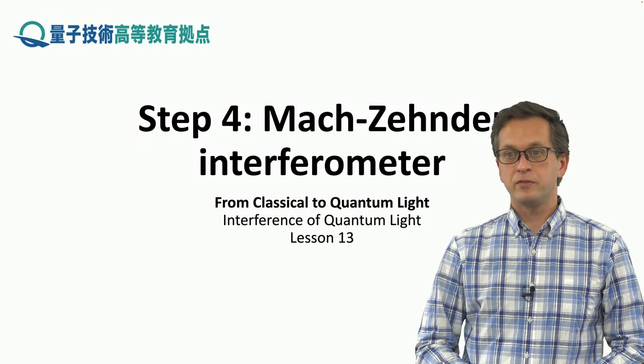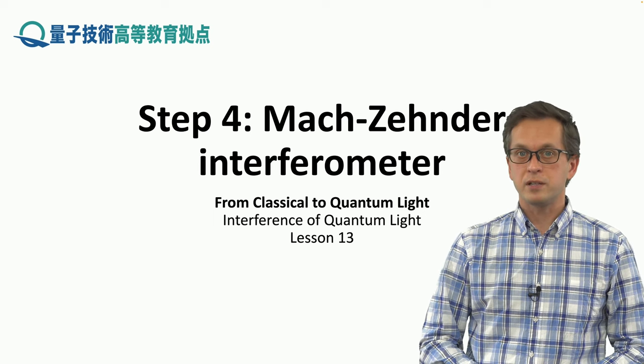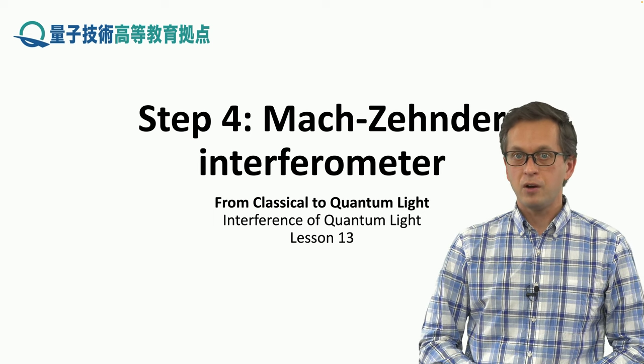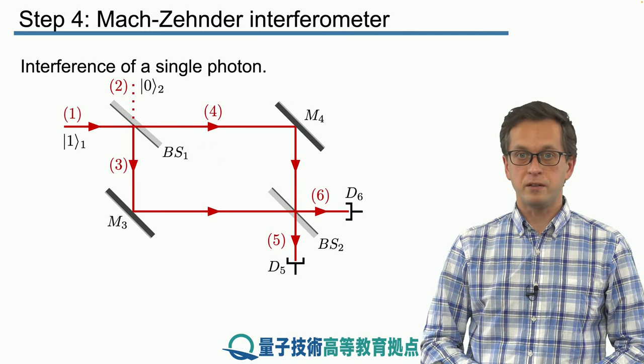Step 4: Mach-Zehnder interferometer. In the previous step, we considered what happens at a single beam splitter. Now we're going to play around with two beam splitters and two mirrors. So this is the setup for Mach-Zehnder interferometer.